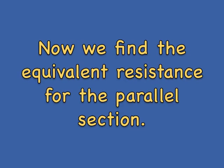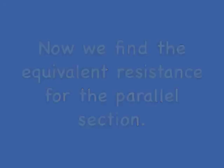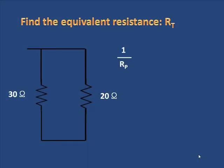Now, we will look at this parallel portion, and we will find the equivalent resistance for the parallel section here. We have a formula for this: 1 over RP is 1 over 30 plus 1 over 20. You can use cross multiplying, you can use your calculator, you can find a common denominator, but we find the answer is 12 ohms. Those two resistors in parallel are replaced by that one resistor.